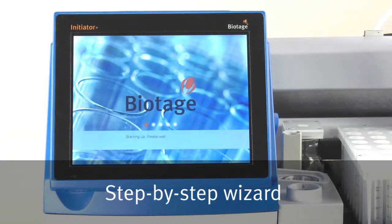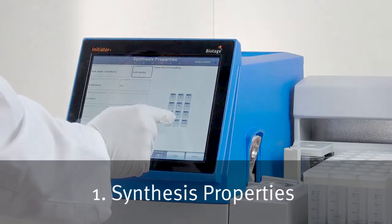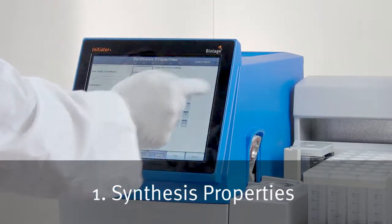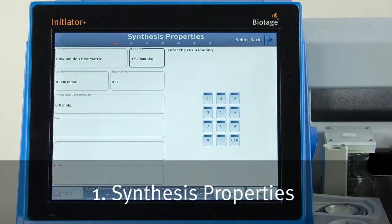Programming a synthesis using the built-in wizard can be done in seven simple steps. In synthesis properties, select the resin and enter the synthesis parameters for scale, equivalence and amino acid concentration.